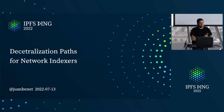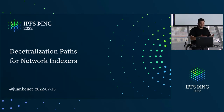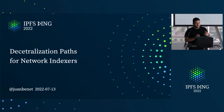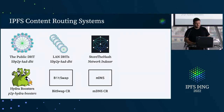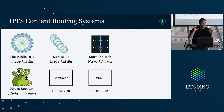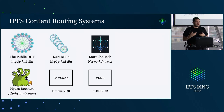I want to talk about decentralizing paths for network indexers. This follows some talks about the network indexers in general. The current architecture is a centralized system. The network indexers that we were describing come in as one additional content routing system for IPFS networks.